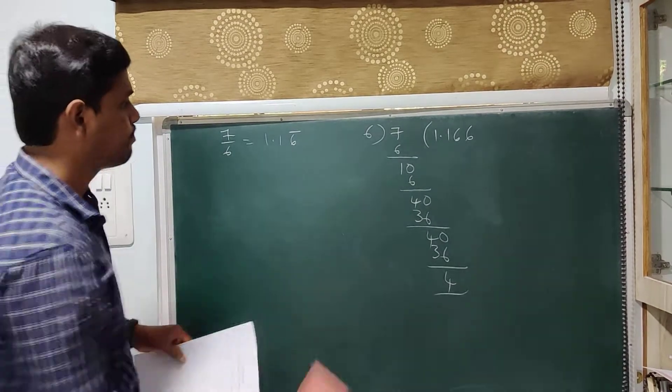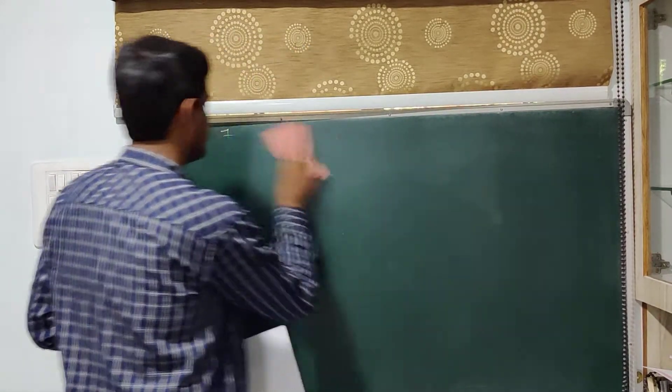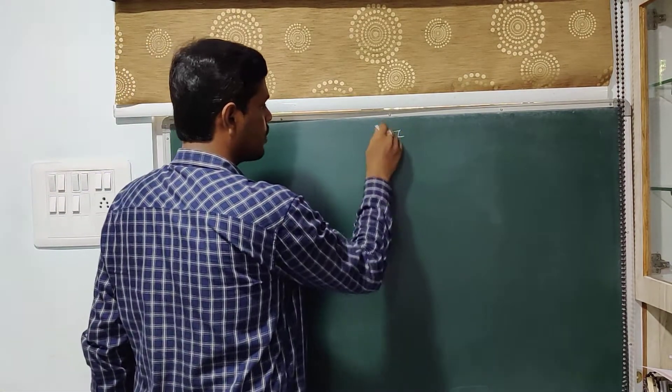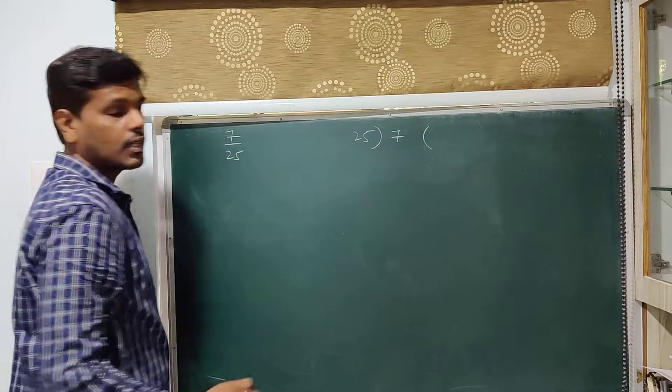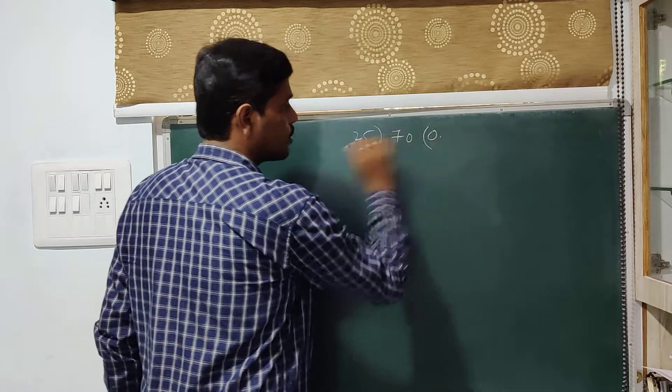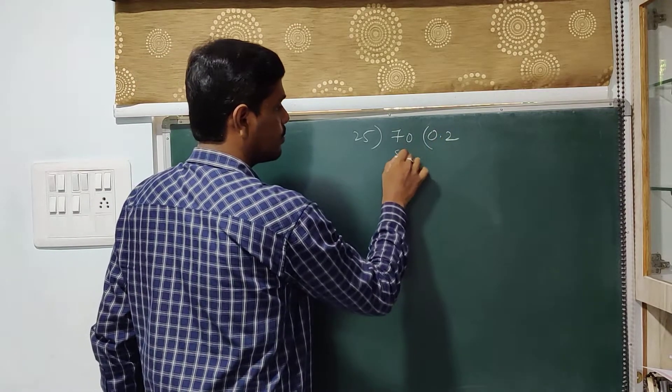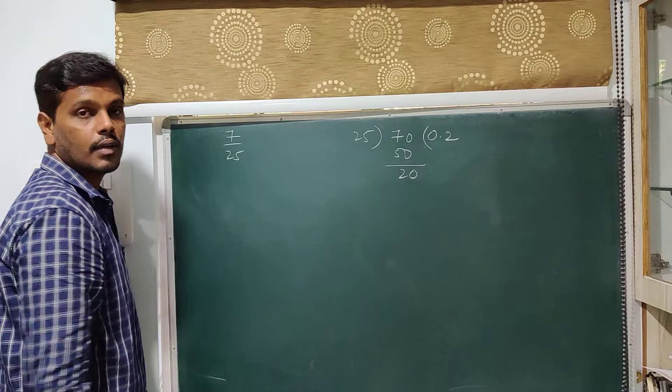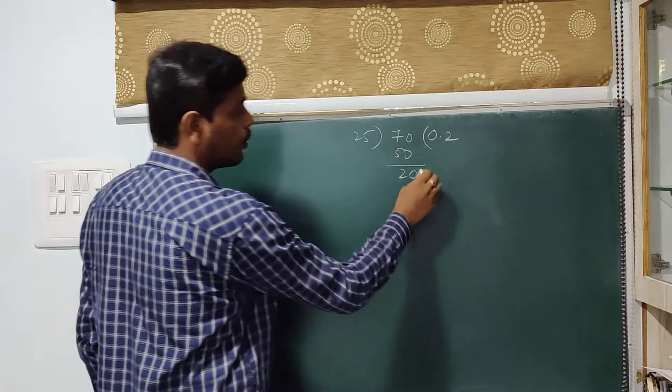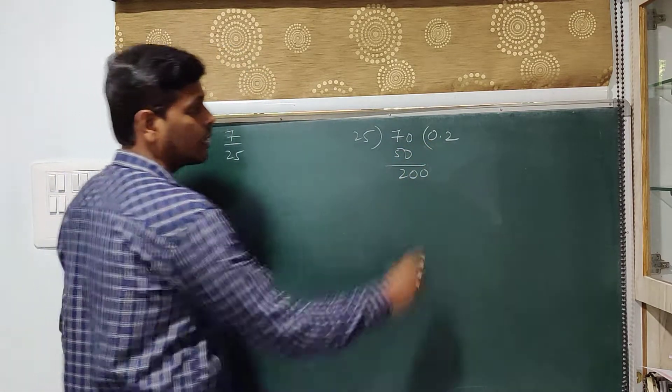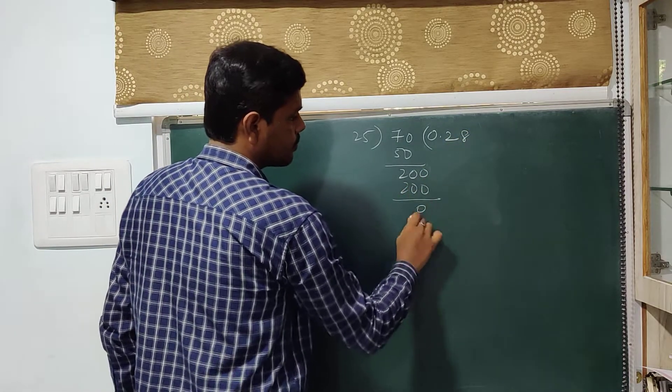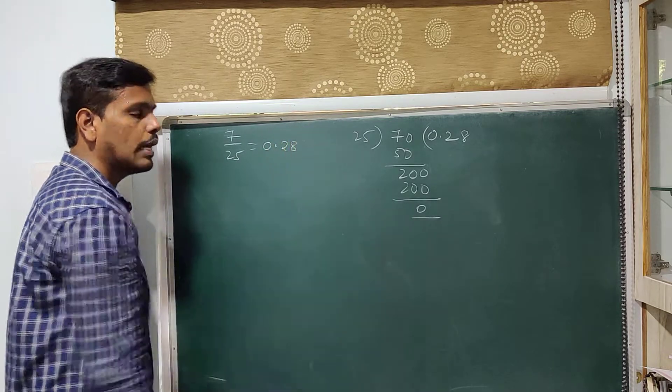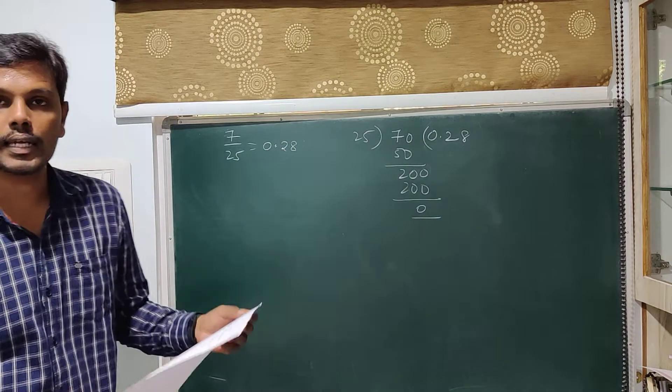Next, 7 by 25. Now 7 is less than 25. So take a point and put a 0. Next, 25 times 2 is 50. So left over is 20 here. Again 20 is less than 25. So we have a point. So you can take 0. 25 times 8 is 200. So 200 minus 200 is 0. So finally this is 0.28. So that is it with regards to the worksheet.